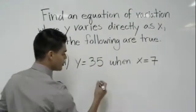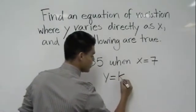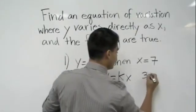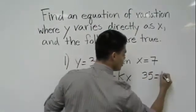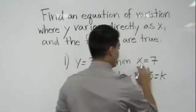What do I always want to do first? I start with my Y is equal to KX equation and now I just substitute my Y. So 35 is equal to K because that's what I don't know yet and that's what I want to solve for, and X is 7.